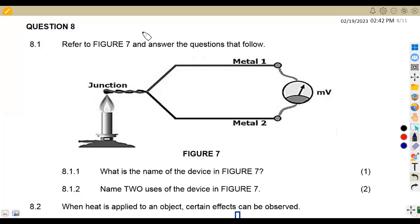We are given to refer to Figure 7 and answer the questions that follow. The first part, 8.1.1, is what is the name of the device in Figure 7? This is our Figure 7. We have a junction, metal one and metal two. So this is actually a thermocouple. Remember that if you are given different metals and a junction, that is a thermocouple. So you're supposed to be able to identify these.